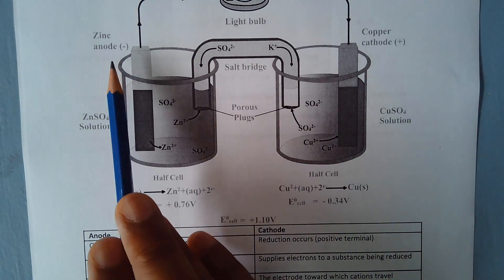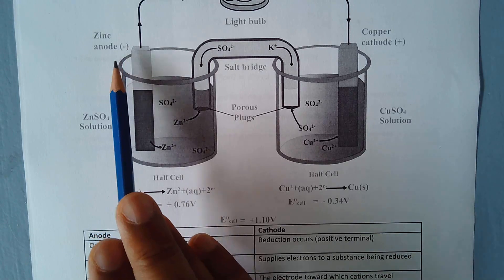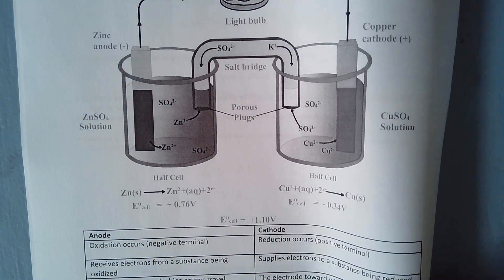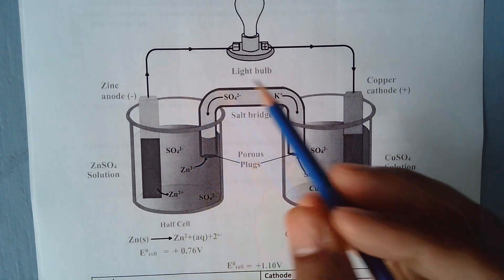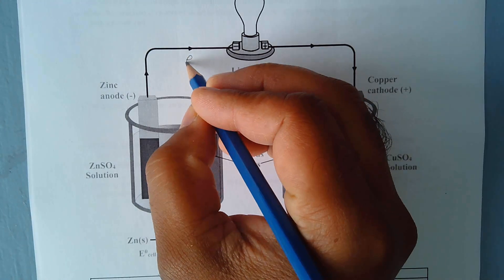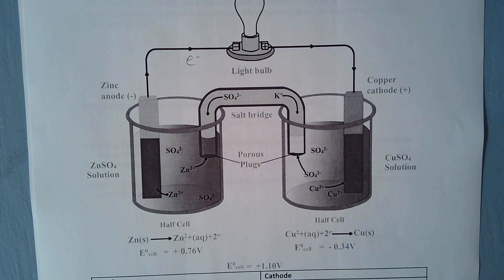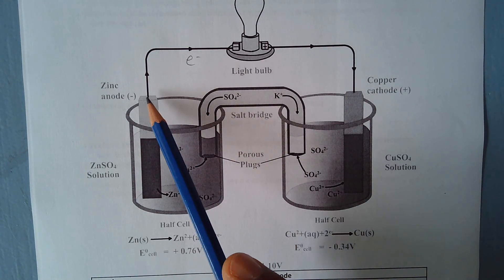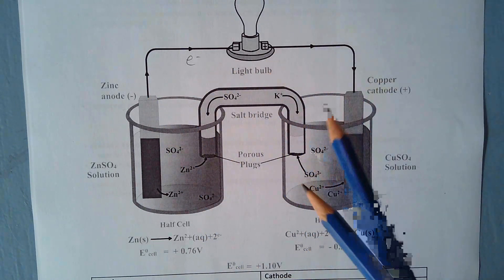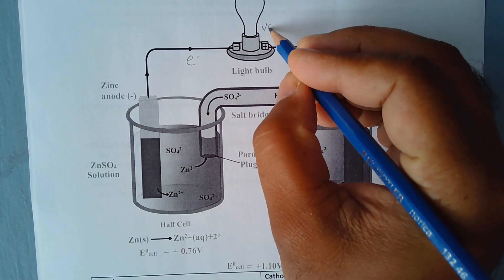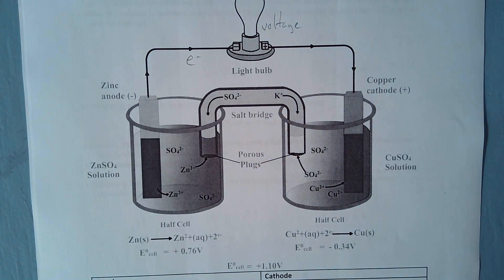You've got two nodes: the anode, which is the negative terminal, and the cathode, which is the positive terminal. Electrons travel from anode to cathode. Any type of circuit is basically electrons moving along some type of conducting wire, and that's what's happening here. In doing so, you create a voltage.